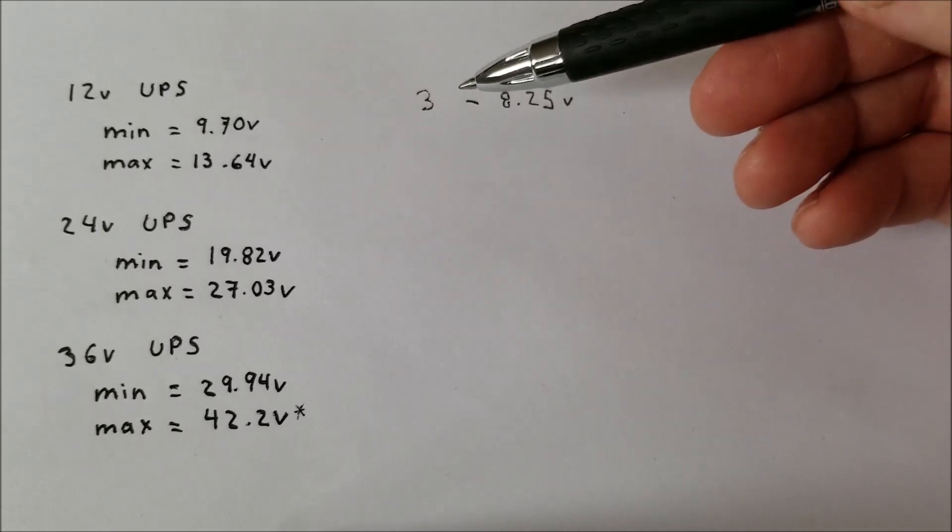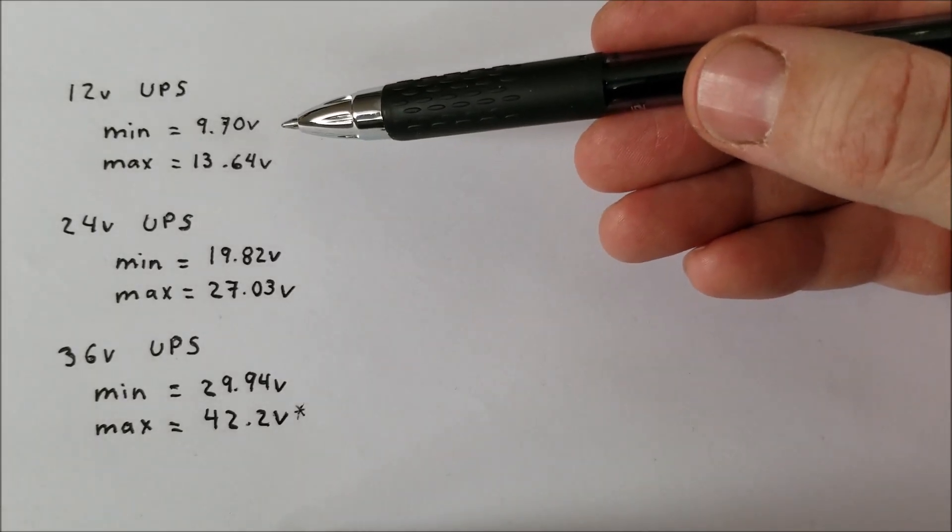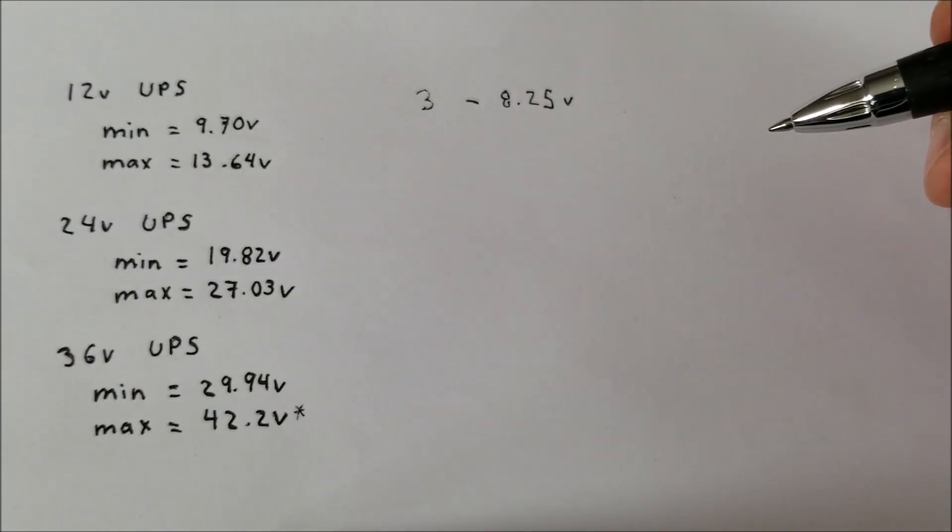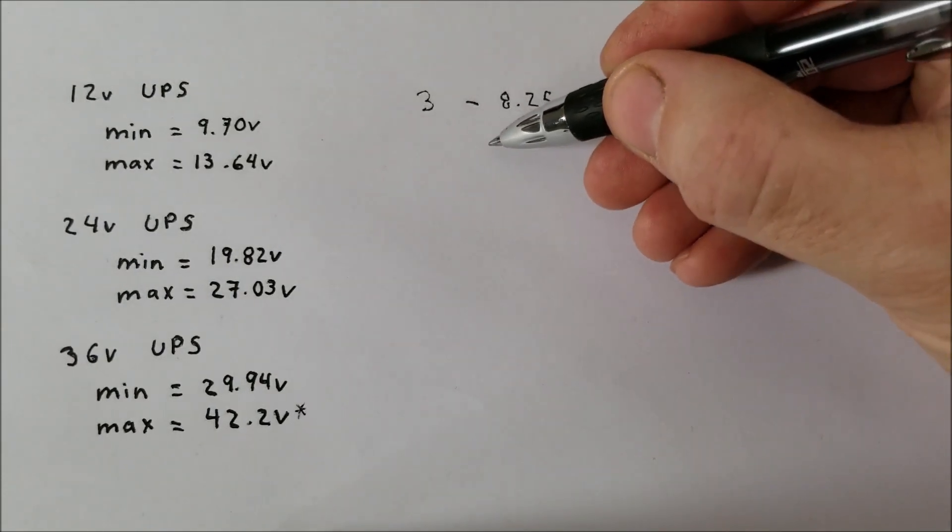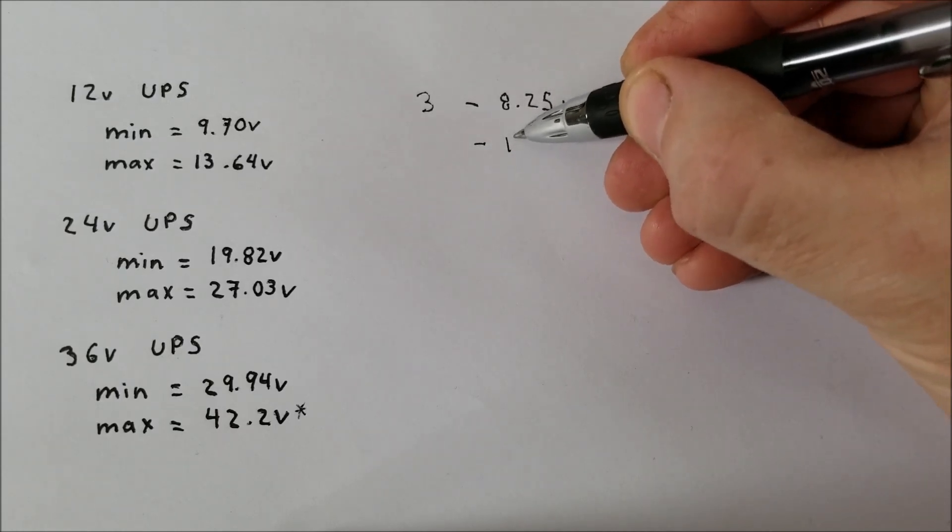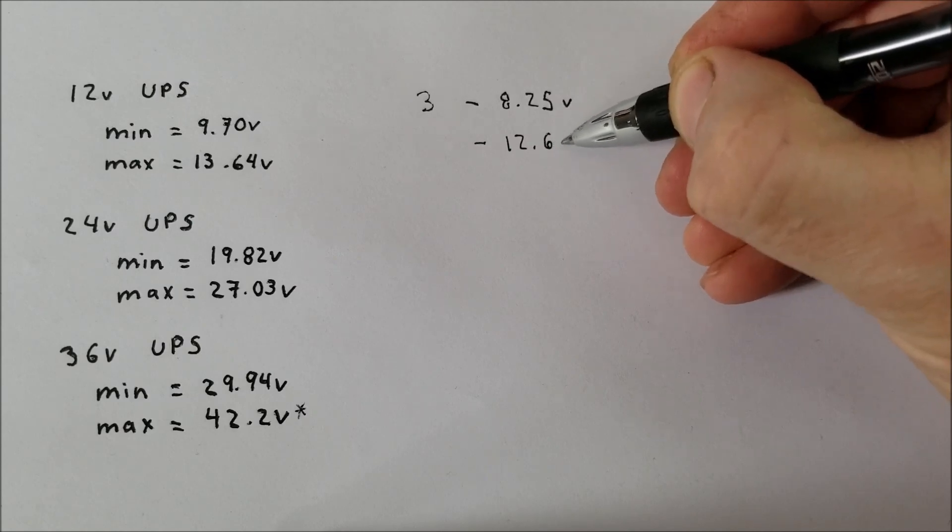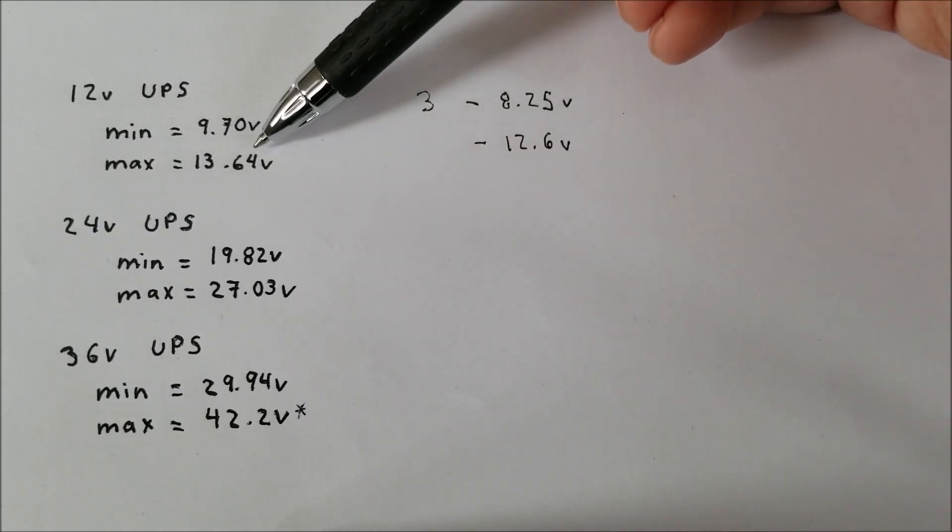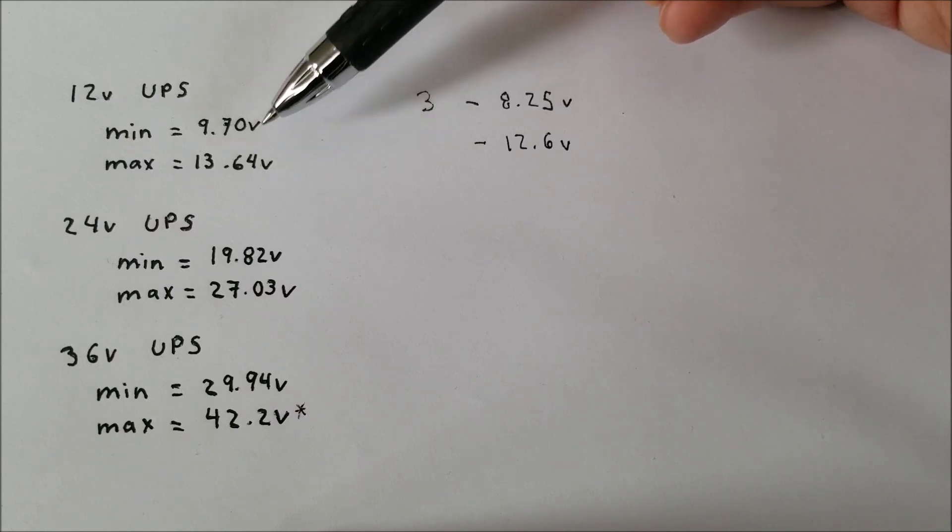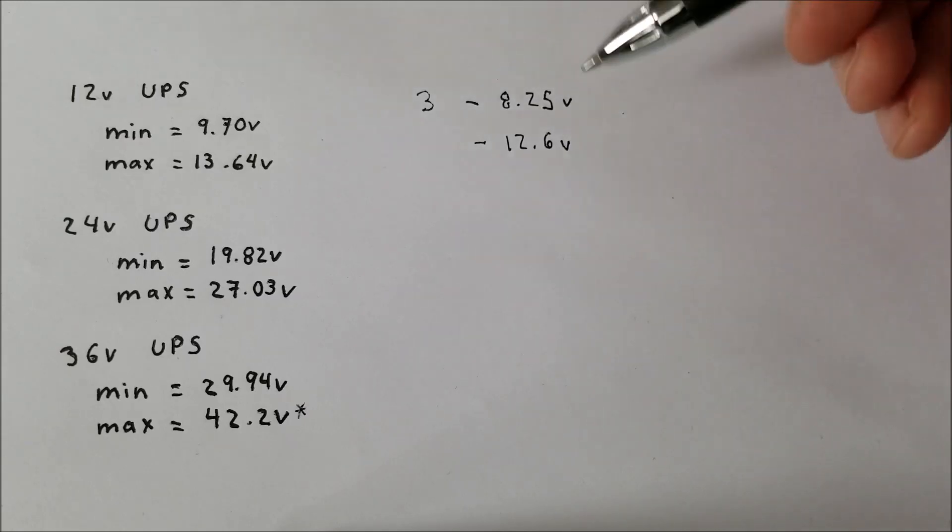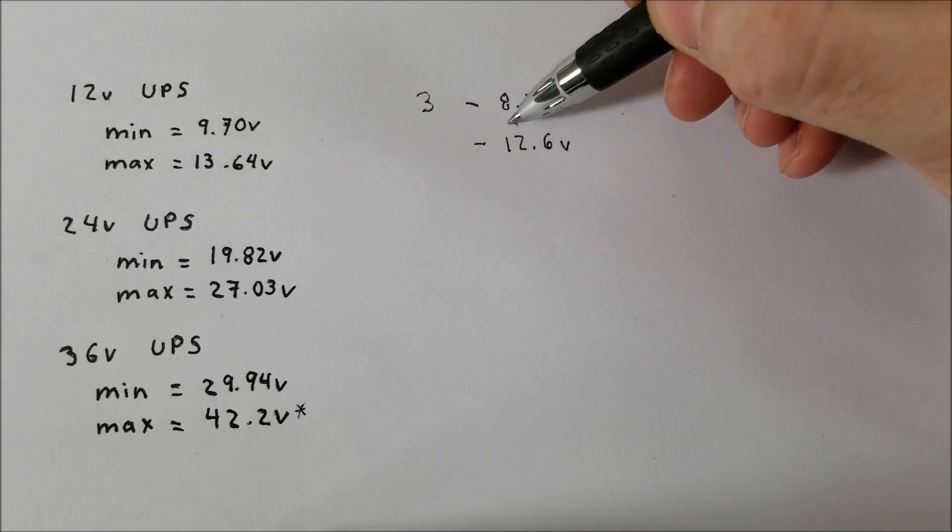Which is safely below the 9.7V the UPS sees. Now if we take the 4.2V for the max and we multiply that by 3, we end up with 12.6V. Now here's where the problem is. The UPS will reach 13.64V, which is quite a bit higher than the maximum voltage these cells can obtain. So obviously we can see here that this will not work.